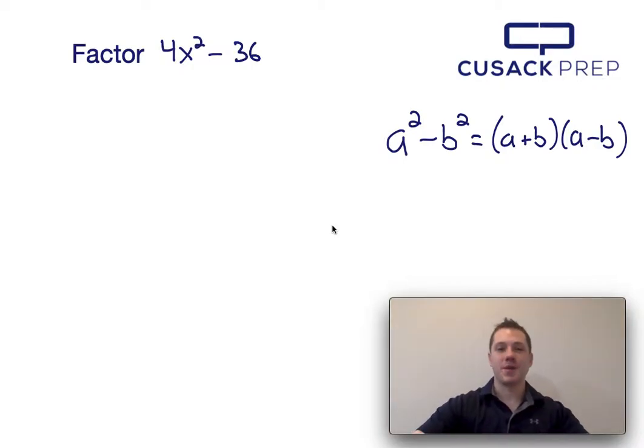Hi YouTube, this is Brendan with CusackPrep and what we're going to do here is factor 4x squared minus 36. Now the first thing I notice is both 4x squared and 36 are perfect squares and they're separated by a subtraction sign, so we can factor this using the difference of squares formula which I presented here on the right hand side.